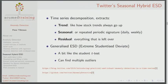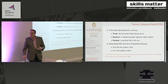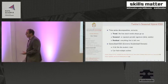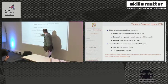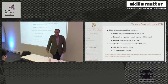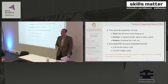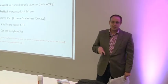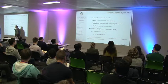Twitter's Seasonal Hybrid ESD is a combination of time series decomposition and the generalised ESD — extreme student deviate test. Time series decomposition attempts to break a signal into an underlying trend, a seasonal periodic component, and anything left over as residual noise. ESD is an awful lot like the student T-test. The reason it's called the student T-test is that it was popularised by a paper in 1908 by an employee of the Guinness factory in Dublin, who published it under the name 'student.'